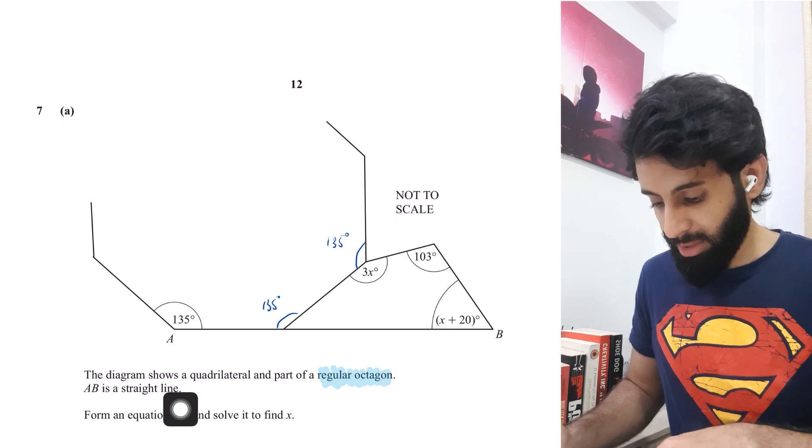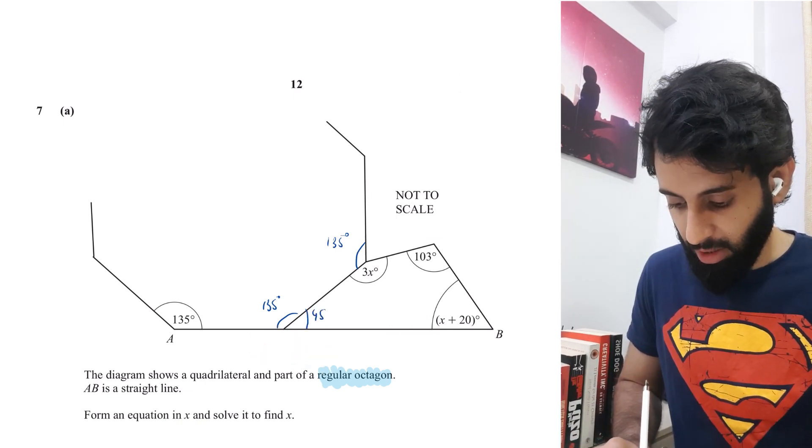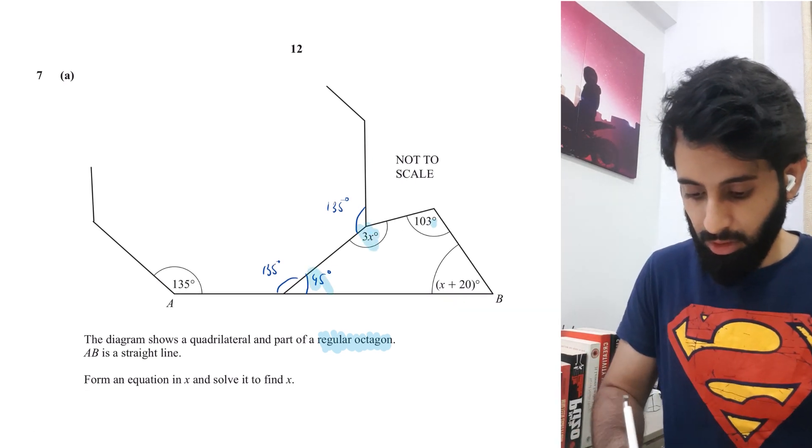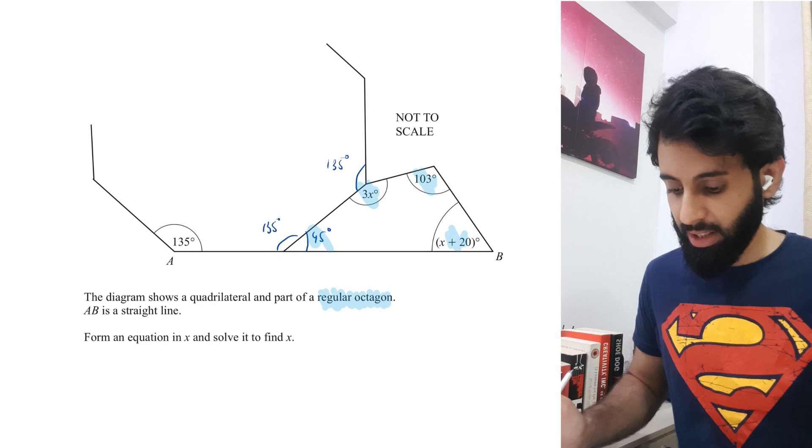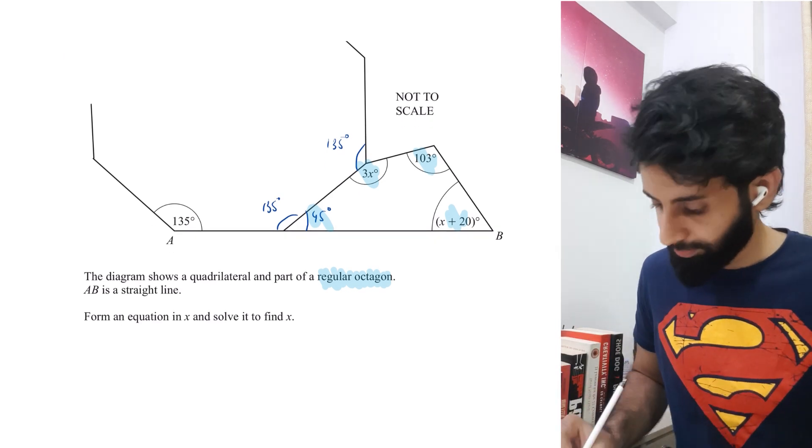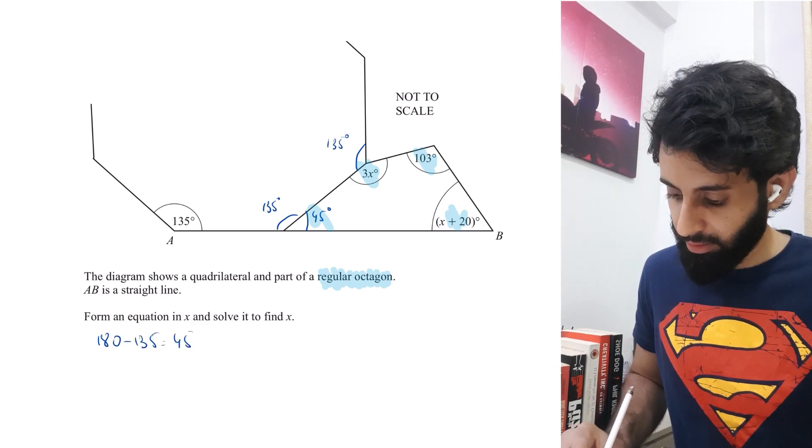The fact that the question told us AB is a straight line means we can work out this angle, which is 45 degrees. 180 minus 135 equals 45 degrees. Now this is a quadrilateral, so the sum of interior angles is 360.